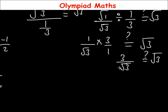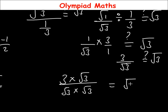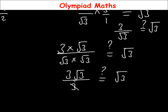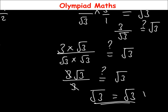We now have 3/√3 and need to check if this equals √3. We rationalize the denominator by multiplying numerator and denominator by √3: (3 times √3) over (√3 times √3) equals 3√3 over 3. Dividing 3 by 3 gives √3, so √3 equals √3. This confirms that t equals 1/3 is the correct answer that satisfies the given equation.